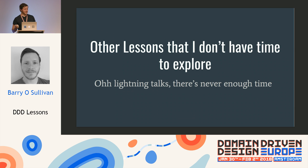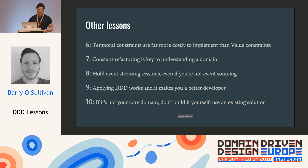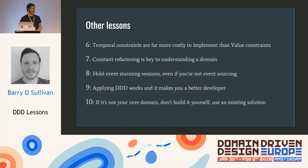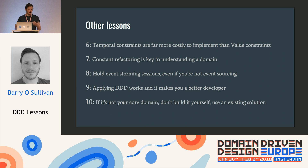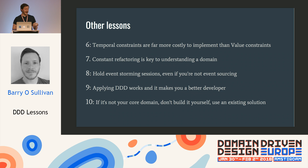It's a lightning talk and there are many more lessons, so I'll fly through these. Temporal constraints are far more costly to implement than value constraints. You've got two types of constraints: a value constraint asks 'is this data in and of itself valid?', whereas a temporal constraint asks 'is this data valid given some previous historical fact?' In modeling a system, temporal constraints tend to be a lot more expensive to implement and maintain. Therefore, when you're doing the culling process with the domain expert, try to get rid of as many naive temporal constraints as you can.